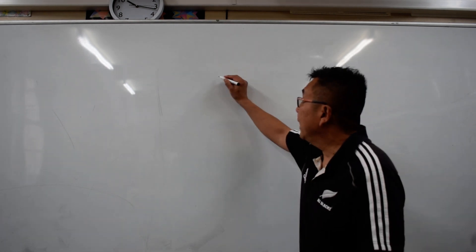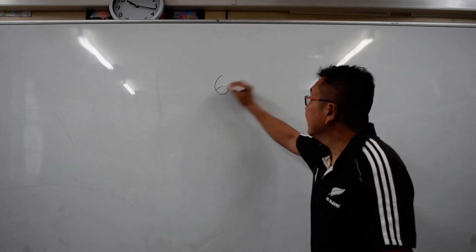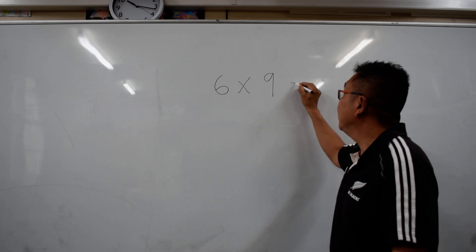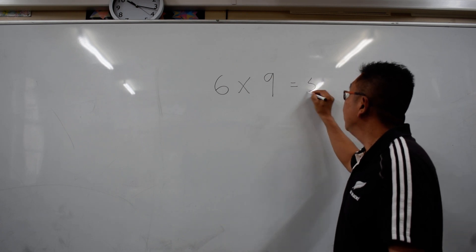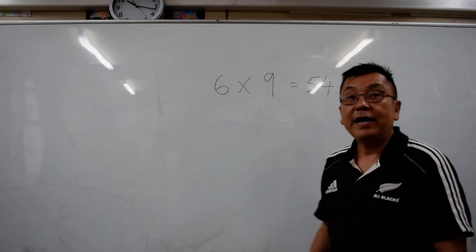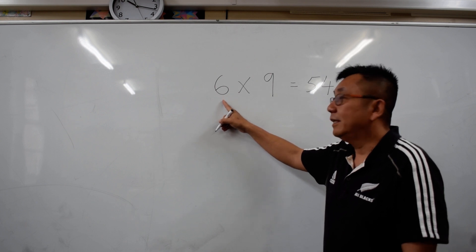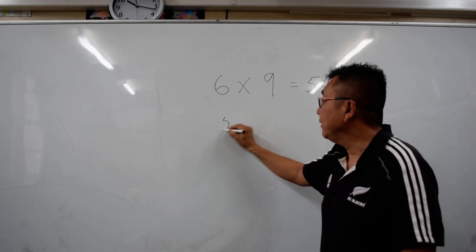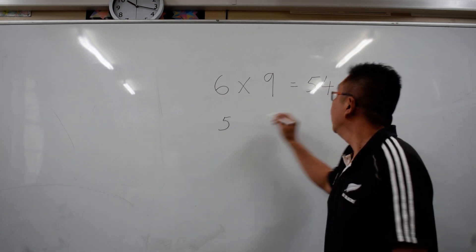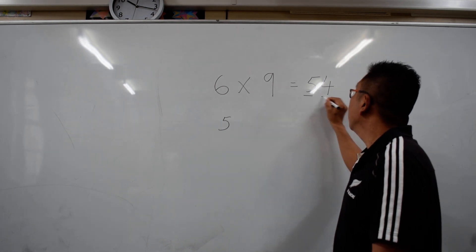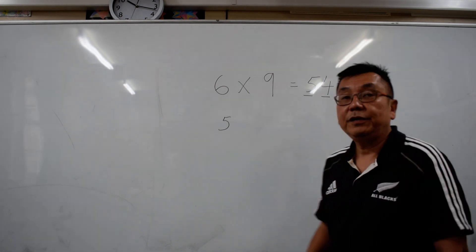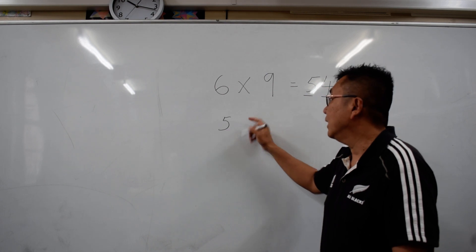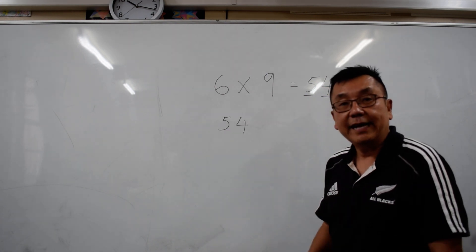So if we have 6 times 9, the answer is 54. How do you do that? You just need to reduce the number 6 by 1, it becomes 5. And to make it 2 digits, the 2 digits must add up to 9. What number added to 5 gives 9? It's 4. Very simple as that.